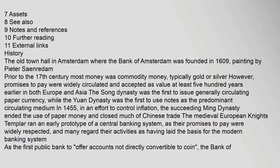The Old Town Hall in Amsterdam, where the Bank of Amsterdam was founded in 1609. Prior to the 17th century, most money was commodity money, typically gold or silver. However, promises to pay were widely circulated and accepted as value at least 500 years earlier in both Europe and Asia. The Song dynasty was the first to issue generally circulating paper currency, while the Yuan dynasty was the first to use notes as the predominant circulating medium. In an effort to control inflation, the succeeding Ming dynasty ended the use of paper money and closed much of Chinese trade. The medieval European Knights Templar ran an early prototype of a central banking system, as their promises to pay were widely respected.